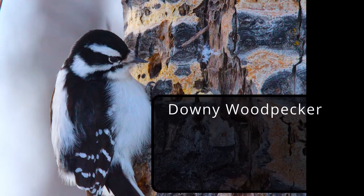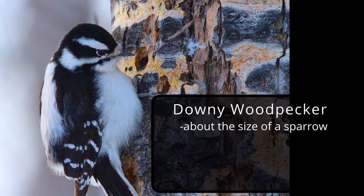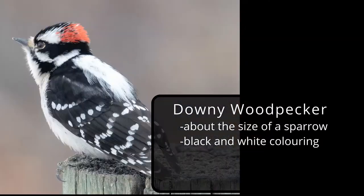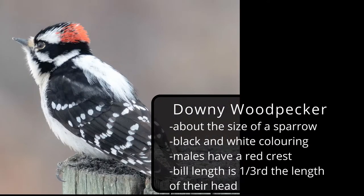The downy woodpecker is about the size of a sparrow. They are black and white and only the males have a red crest. Their bill is about one-third the length of their head.